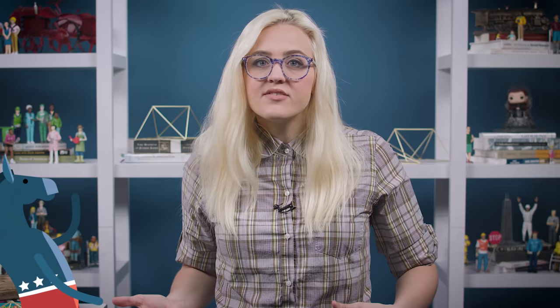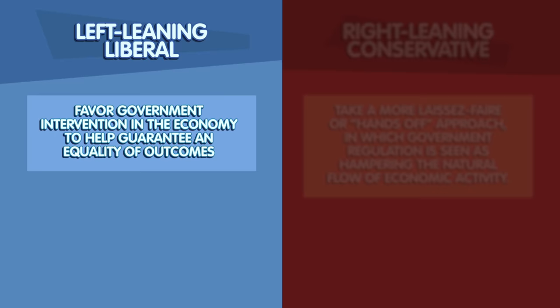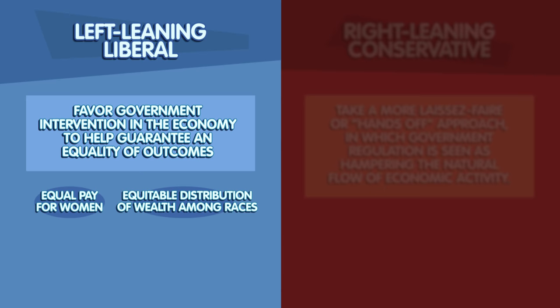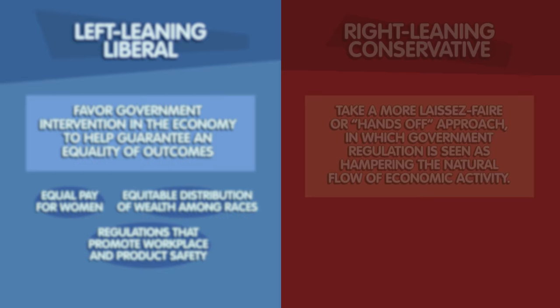In the US, this ranges from liberal on the left of the spectrum to conservative on the right. These beliefs shape the distribution of power and resources in the US in some very fundamental ways. On economic issues, left-leaning or liberal perspectives often favor government intervention in the economy to help guarantee an equality of outcomes. Equal pay for women, equitable distribution of wealth among races, and regulations that promote workplace and product safety are all examples of economic issues that the left is frequently concerned with.